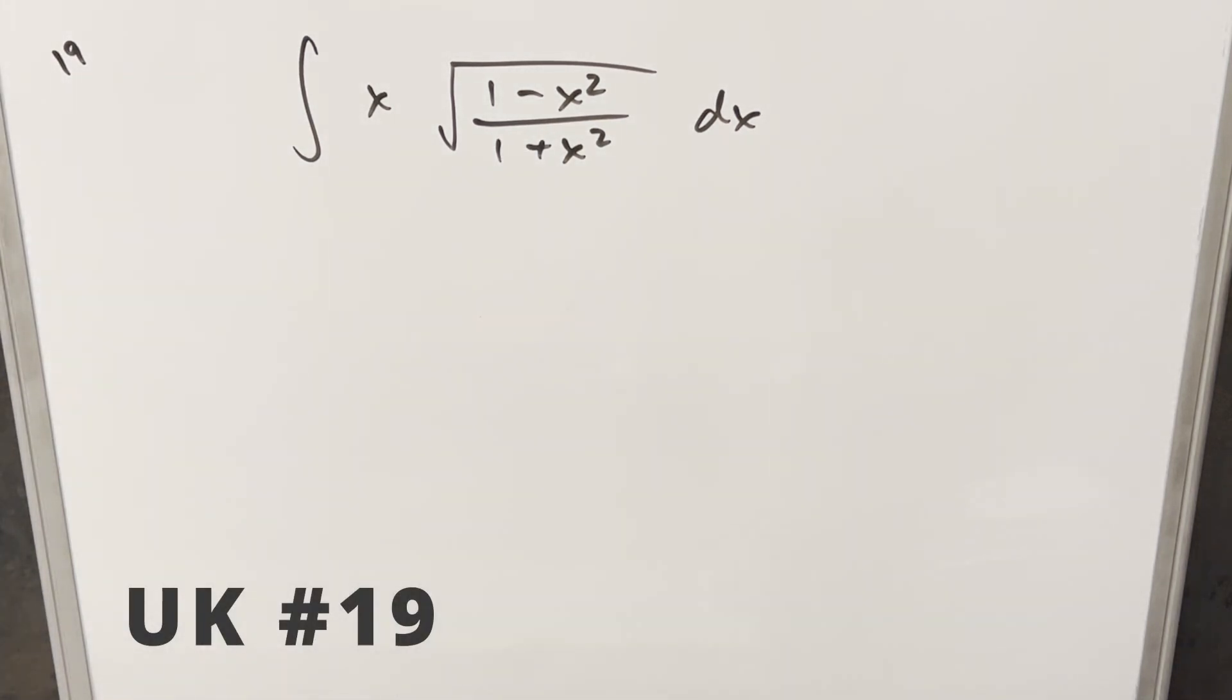Okay, we have an interesting integral. This one's from the UK integration B sample number 19. We have the integral of x times the square root of 1 minus x squared over 1 plus x squared dx.